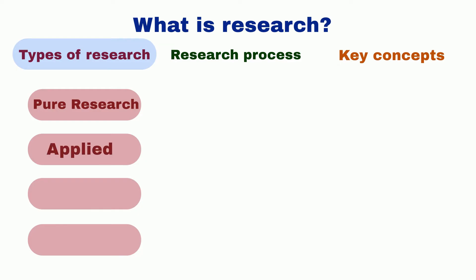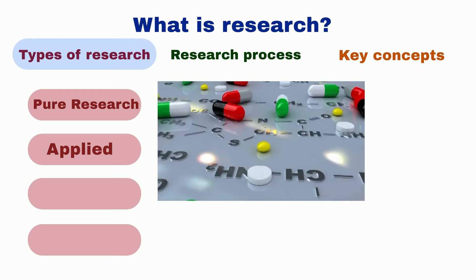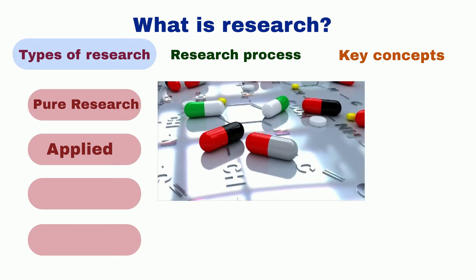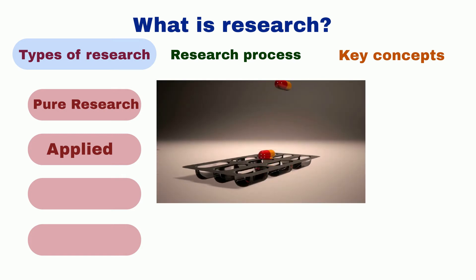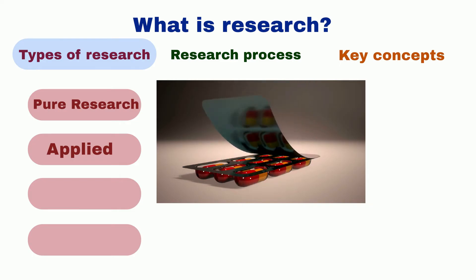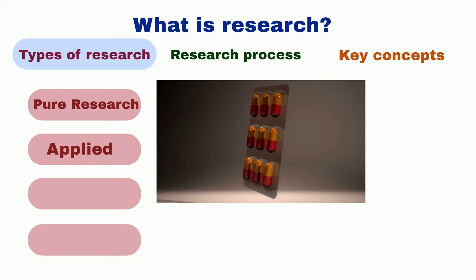Applied research is aimed at solving practical problems in a particular field. It is often conducted with a specific application in mind and is focused on finding solutions to real-world problems. An example of applied research is the development of a new drug to treat a specific disease. Researchers might identify a biological target involved in the disease and develop a drug to alleviate the symptoms, focused on finding a practical solution — namely the treatment of the disease.